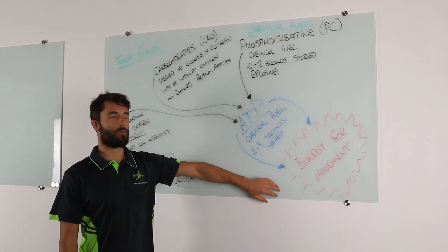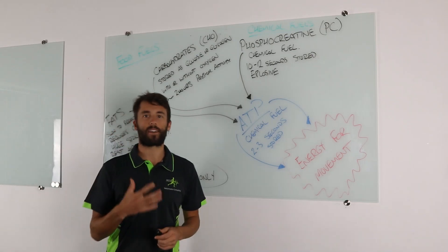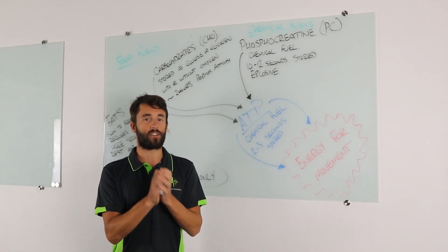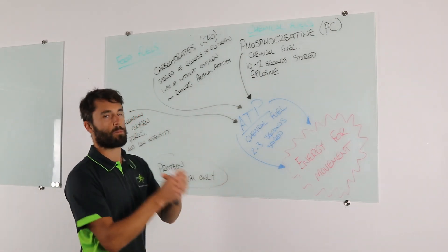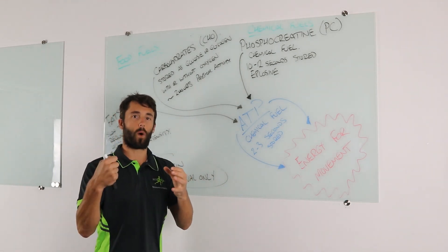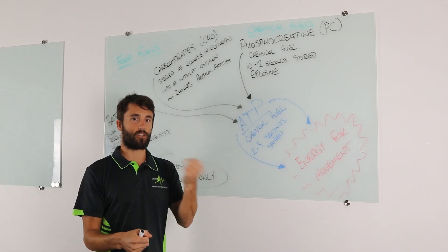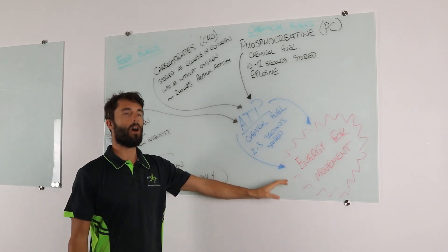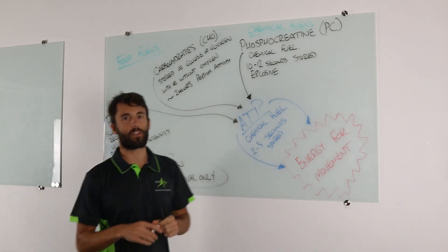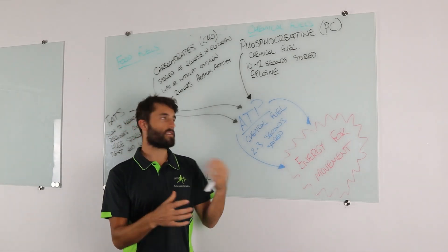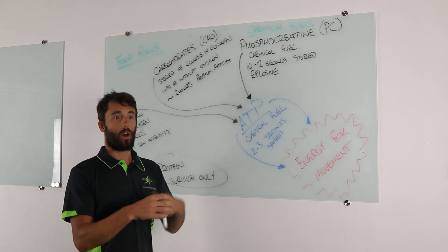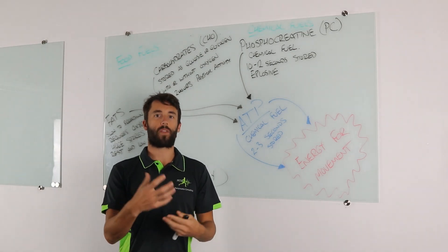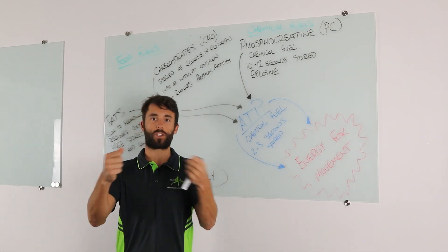All of the energy we get for movement is going to come from ATP — adenosine triphosphate — made up of one adenosine molecule and three phosphates all bonded together. We break down that bond, one of those phosphate molecules breaks away, leaving ADP, adenosine diphosphate, and that extra phosphate. When that bond is broken it releases energy which allows us to move. The problem is we only have two to three seconds of this stored ATP in our body.